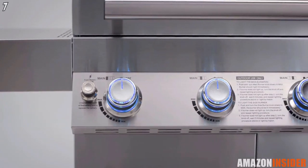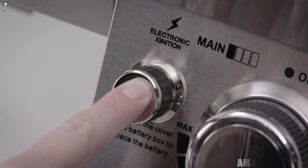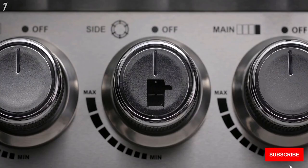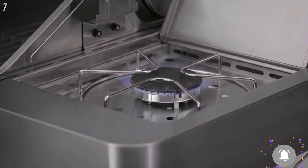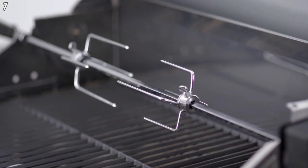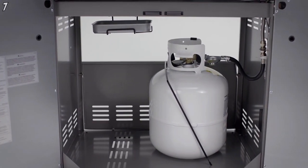The Monument Grills include LED control knobs and are easy to light with pilotless electronic ignition powered by a AA battery. You can use the side burner to warm sauces or cook your favorite side dish without going inside and the included rotisserie allows you to roast meats evenly for the best flavor. Looking inside the double stainless steel doors, there's a propane tank holder and extra storage.